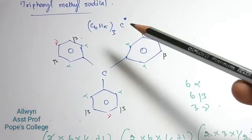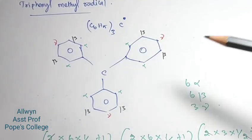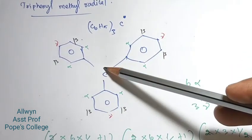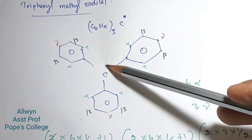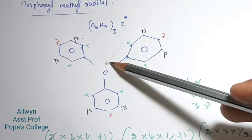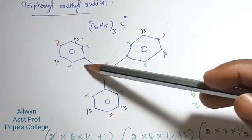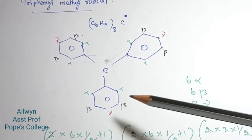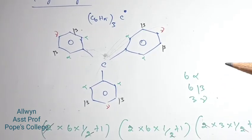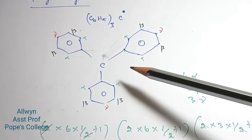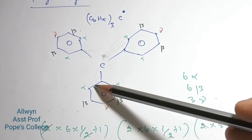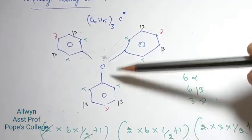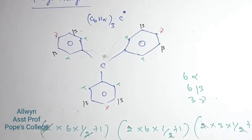Triphenyl methyl radical — there is one radical giving one signal. With hyperfine interaction there are different lines. There are two types of alpha and beta protons. In the hydrogen-bearing carbons, 2 are the same type, and another 2 carbons are also the same.